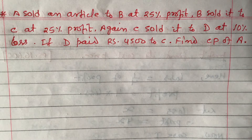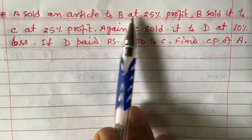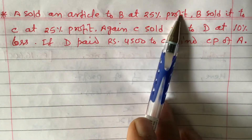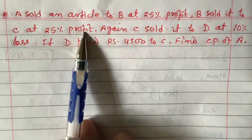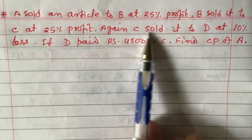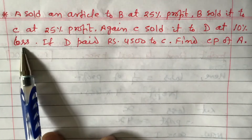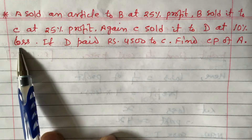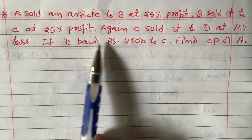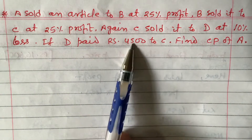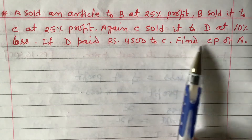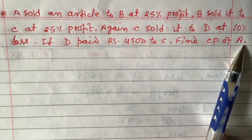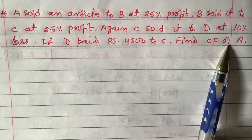The question is: A sold an article to B at 25% profit. B sold it to C at 25% profit. C sold it to D at 10% loss. D paid rupees 4,500 to C. Find the cost price of A.